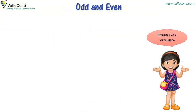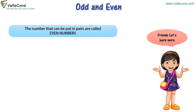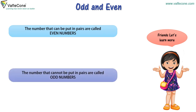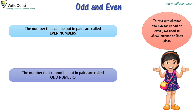Friends, let's learn more. The numbers that can be put in pairs are called even numbers. The numbers that cannot be put in pairs are called odd numbers. To find out whether a number is odd or even, we need to check the digit at the one's place.